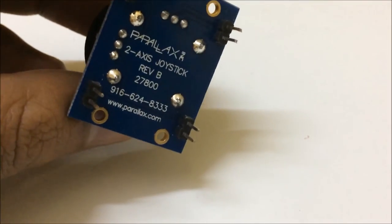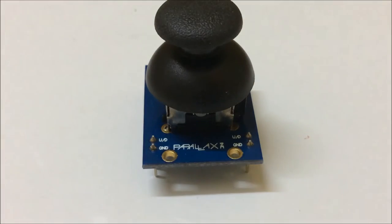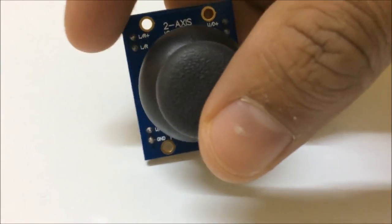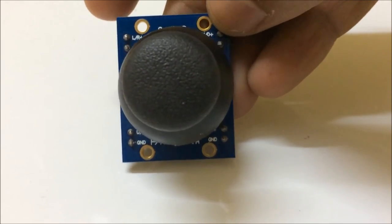If you look behind it, you have Parallax two-axis joystick. This is basically available in the market, you can buy it. It is basically used - I am planning to make an RC car and control it with a joystick.